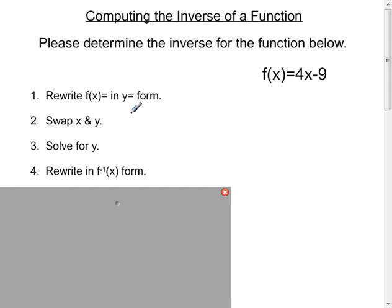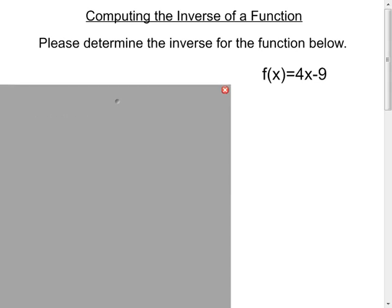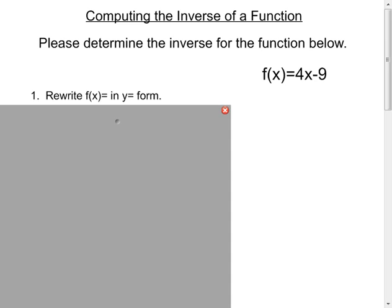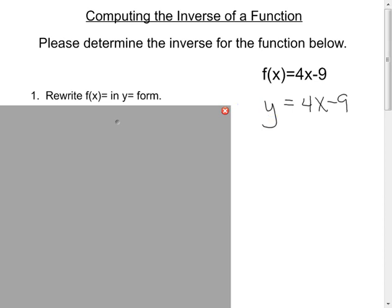So let's examine this function. f(x) equals 4x minus 9. Let's work through the steps. Step one: rewrite f(x) in y-equals form — so I'm going to write y equals 4x minus 9. Again, f(x) and y are equivalent notations in mathematics; they both stand for the range.